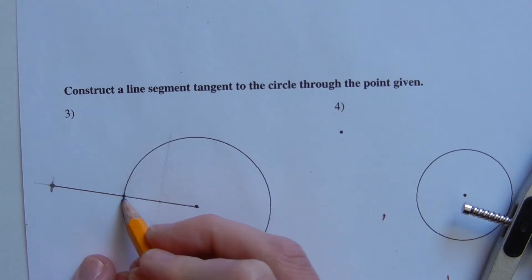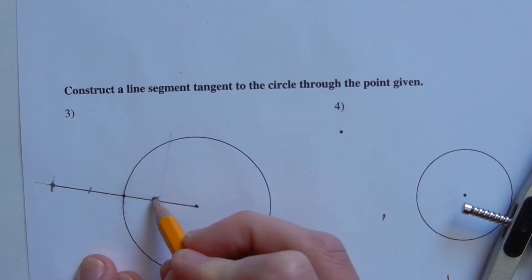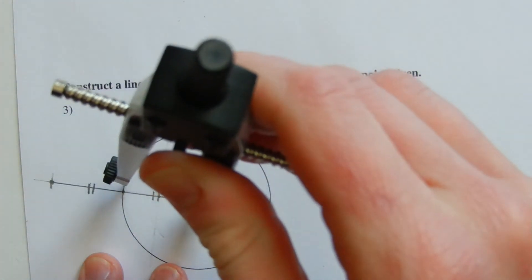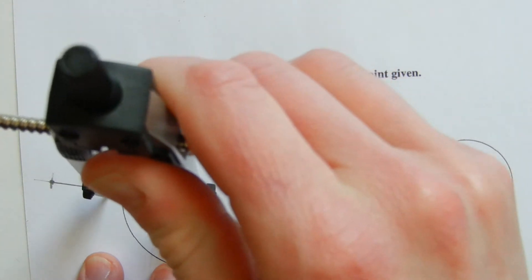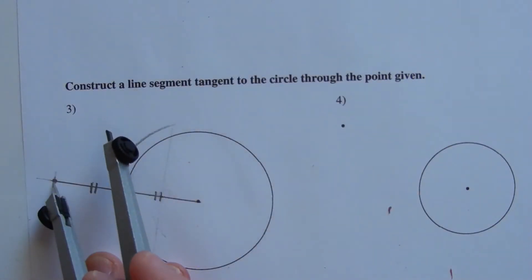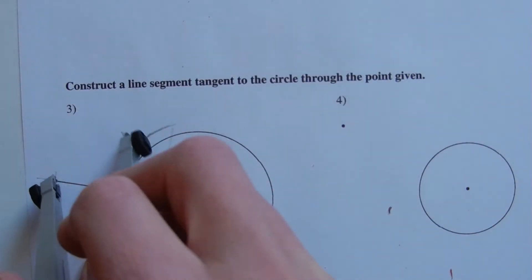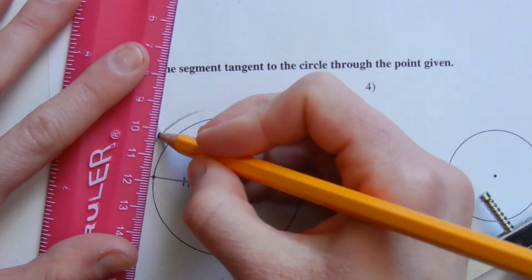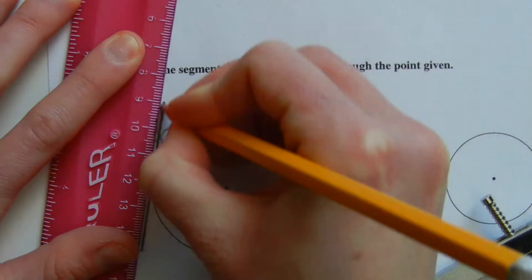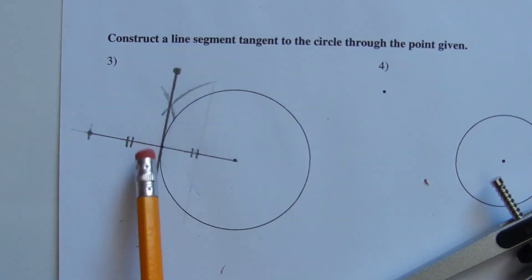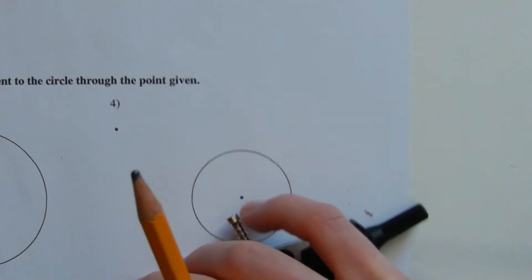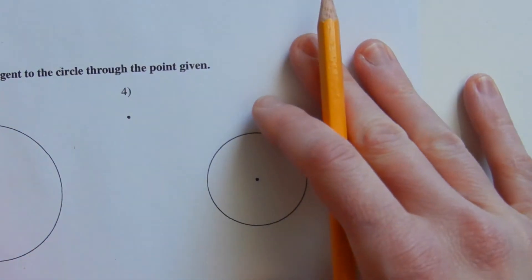Now I'm going to find the perpendicular bisector of this segment length, knowing that the point on the edge of the circle is in the center of that line — since this distance is congruent to this distance. In order to find the perpendicular bisector, I'm going to extend my compass a little more than half the distance from endpoint to endpoint. I only need to make a mark to one side since I have the midpoint already. The intersection connected with the midpoint will give me my tangent line — so this is my line segment tangent to the circle through the given point.